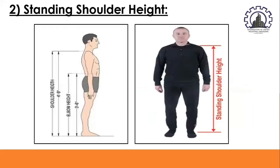Standing shoulder height is the height of the acromion above the ground. It is used in ergonomics to estimate the height of the center of rotation of the arm above the ground and to specify the maximum allowable height for a control. A short worker should not need to elevate the arms above shoulder height to operate a control.